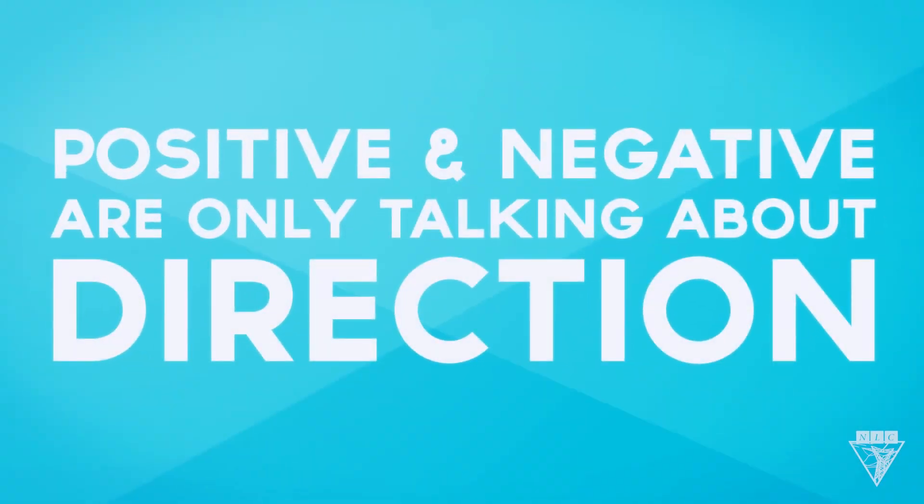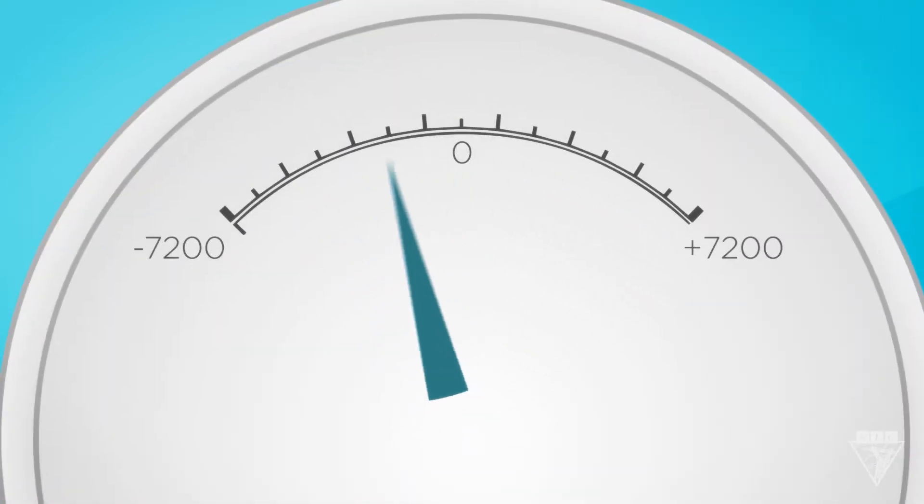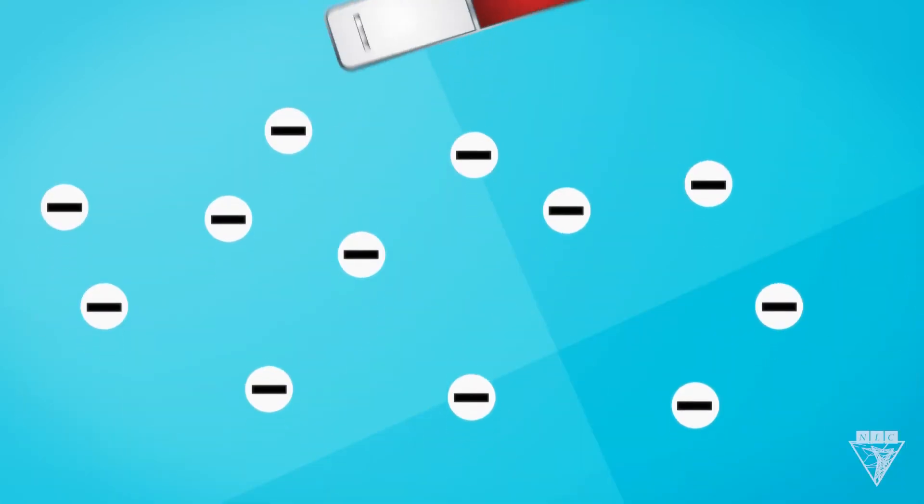The words positive and negative are only talking about the direction electricity is flowing. It's not like a negative voltage means there's less voltage. It just means electrons are moving toward the magnet.